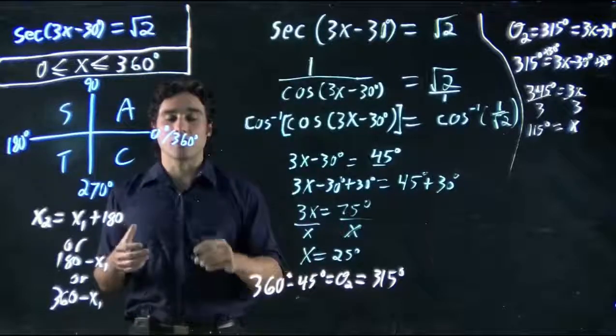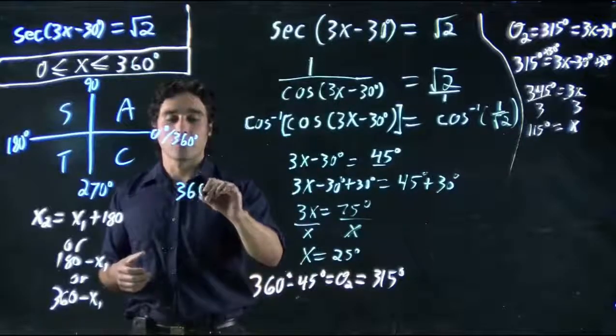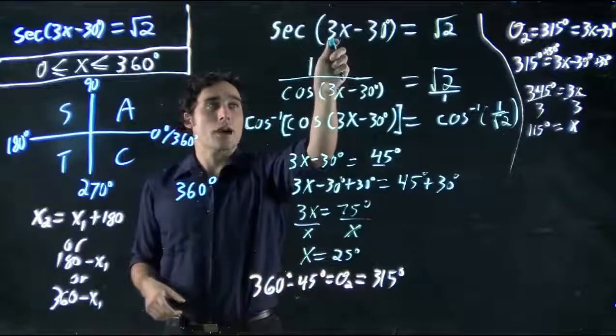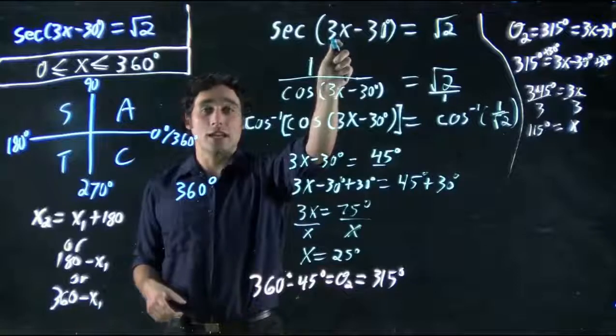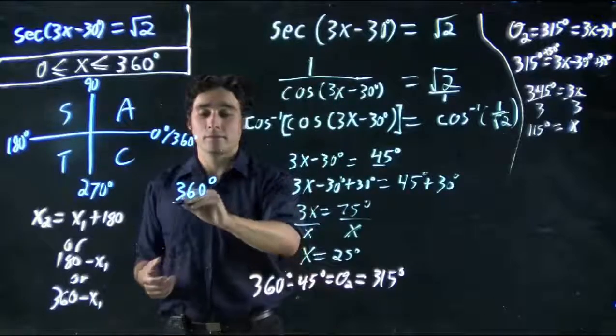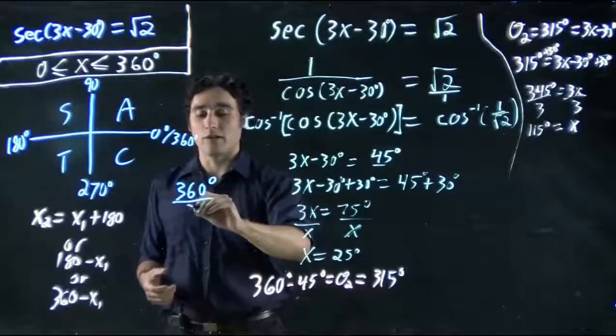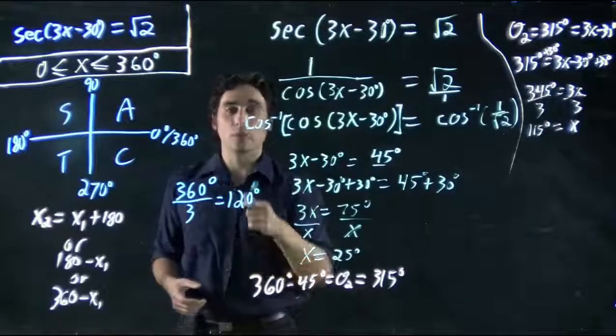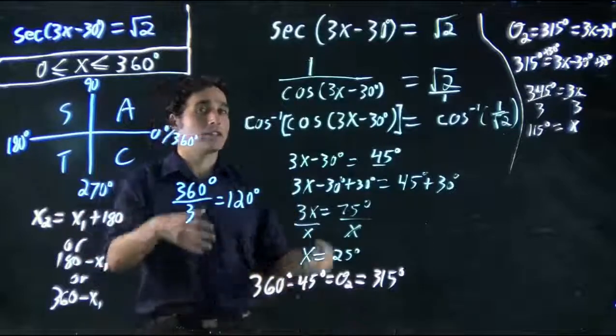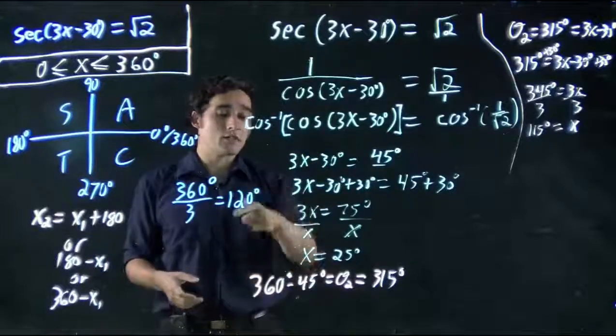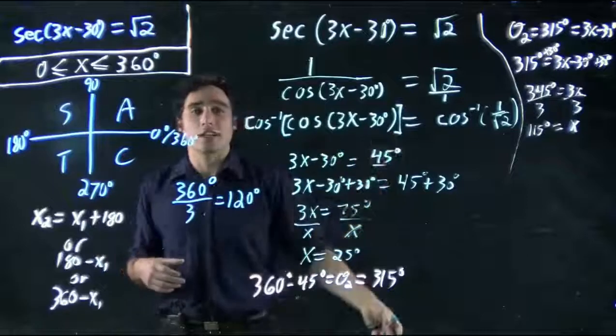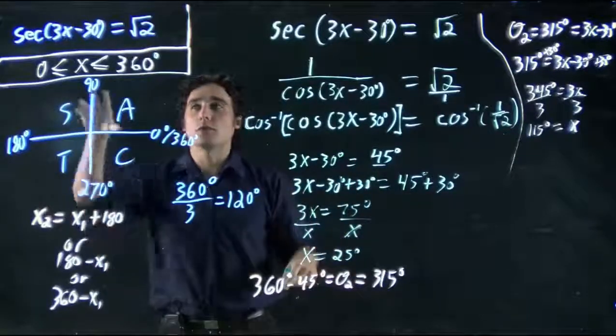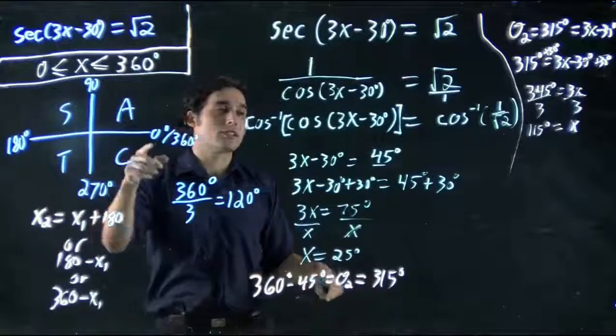So remember, normally the period is 360. Your normal cos, tan, or sine function has a period of 360. But you have to divide it by the term in front of the x to find the new period. In this case, we have 3 in front, so we have to divide it by 3, which gives us 120 degrees. That is our new period. This is how often the function repeats itself. Every 120 degrees, we should get the exact same function occurring again. So we've made more solutions possible in this 360 degree range.